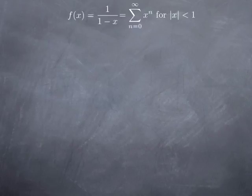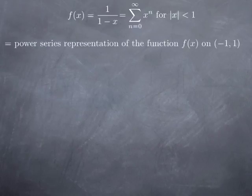Of course you have to assume that this series is convergent, in other words that the common ratio is in absolute value less than 1, so this equality is valid only when x is between negative 1 and 1 strictly. And so this is an example of a power series representation of a function, in this case on the open interval from negative 1 to 1.